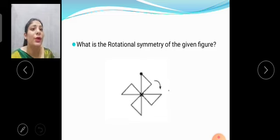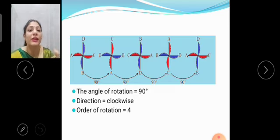Now, what is the rotational symmetry of a given figure? As you can see, there is no line of symmetry in this figure. But there is angle of rotation. How? First image is representing A, B, C, D.